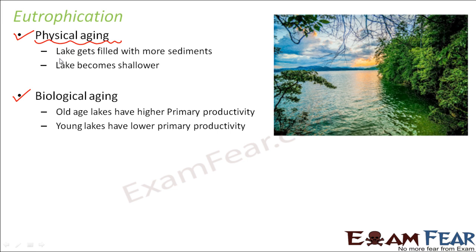When we say physical aging, it means there is some difference in the physical appearance of the lake with aging. For example, with aging the lake gets filled with more sediments — the sediments present at the bottom of the lake tend to increase. The lake becomes shallower, meaning the depth of the lake decreases. Initially the lake has a certain depth, but after a couple of years as the lake starts to age, the bottom part gets filled with sediments settling down at the bottom, and the depth gets reduced. So with physical aging, sediments increase and the lake becomes shallower.